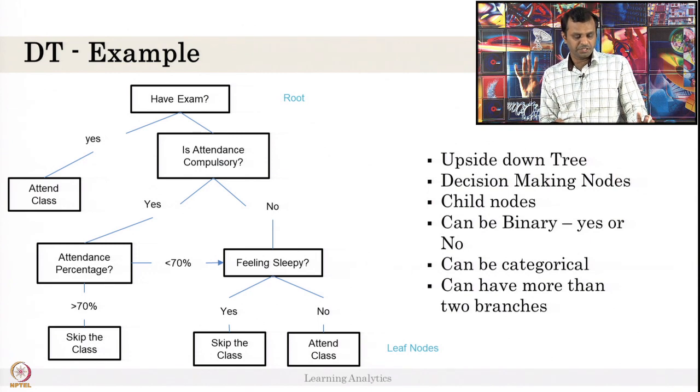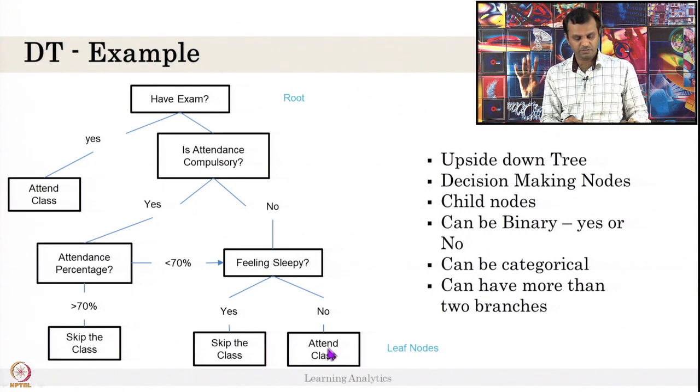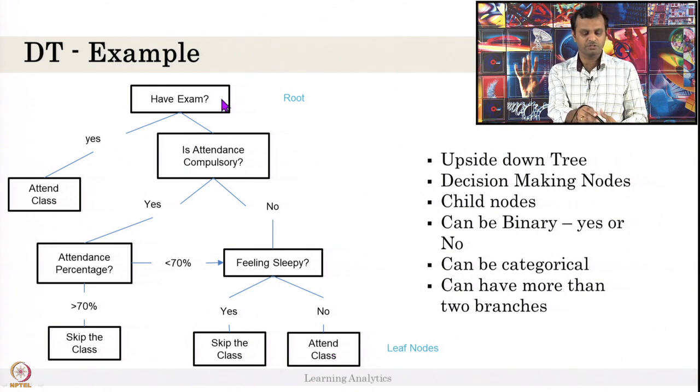Decision tree is an upside down tree and the branch can be binary or non-binary. The labels can be binary or categorical variable. There is a parent for each child node, root is the root, and there is a leaf node where there is no child for that - that is the last node.